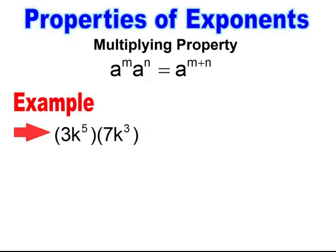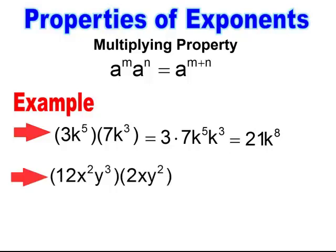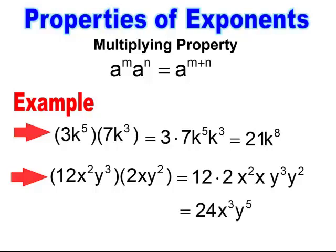Our next example is a combination where we have bases with powers and multiplication. Multiplication is multiplication — when you have numbers being multiplied, you multiply the numbers. So 3 is being multiplied to 7, and for the like bases with powers, you add the powers together. 3 times 7 is 21, and then for like bases you add the exponents to get k to the 8th power. When there's multiple things going on, multiply numbers together and add exponents for like bases. Here I get 12 times 2, which is 24, then x squared times x (which has a power of 1) gives x to the 3rd, and then y to the 5th.